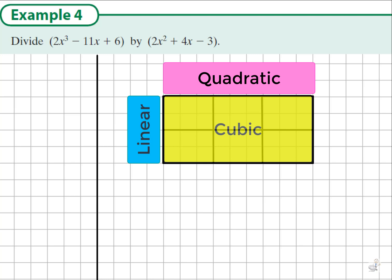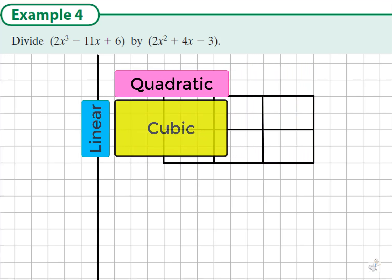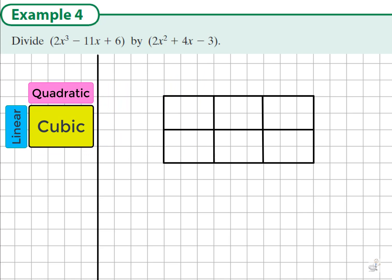So when we divide the cubic by the quadratic, it's a linear factor that we're looking for. So we know what the answer will look like.